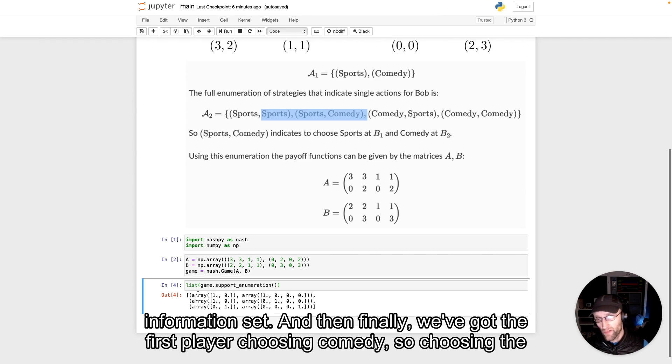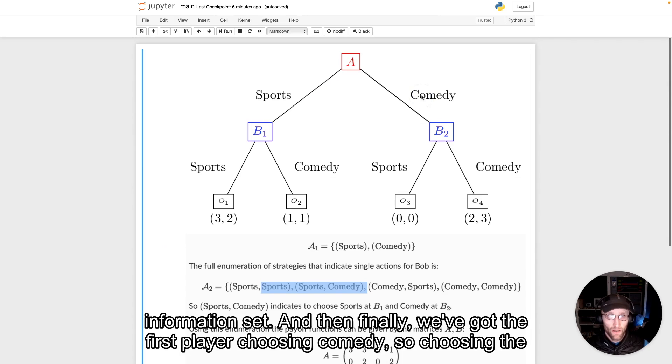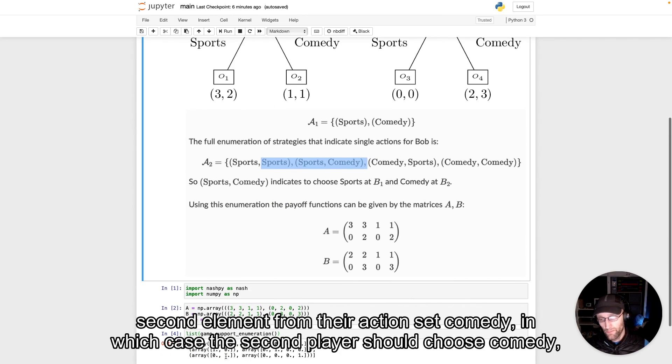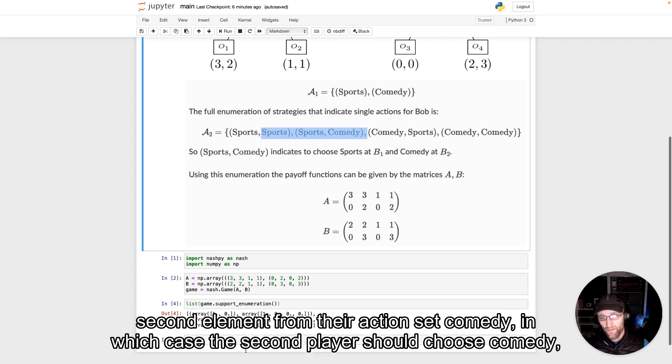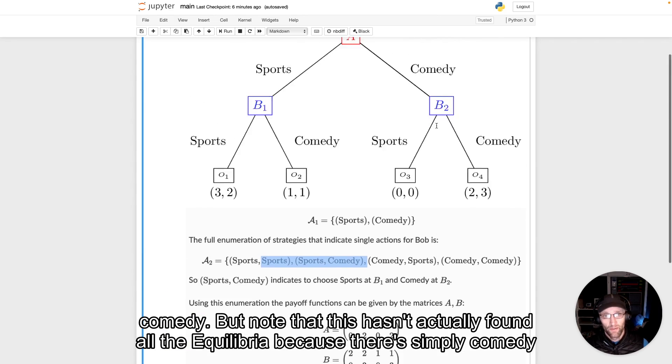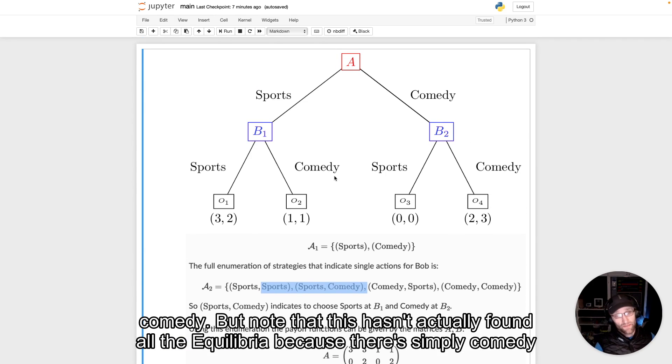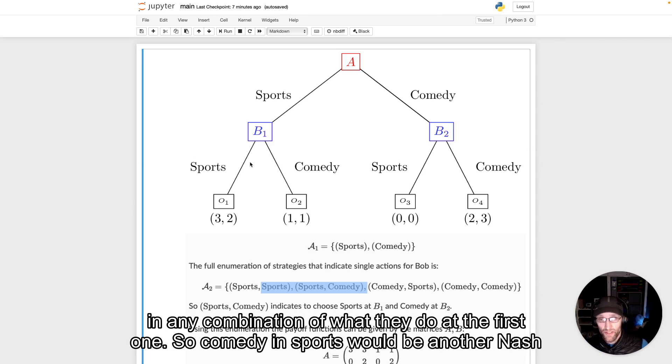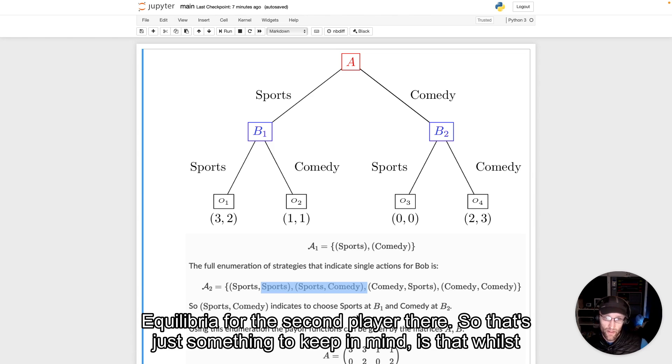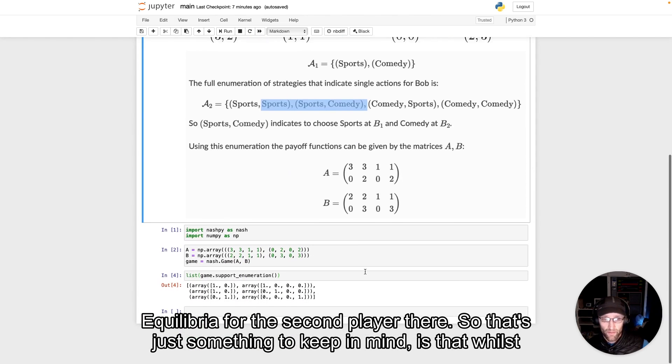And then finally, we've got the first player choosing comedy, so choosing the second element from their action set, comedy, in which case the second player should choose comedy, comedy. But note that this hasn't actually found all the equilibria because there's simply comedy in any combination of what they do at the first one. So comedy in sports would be another Nash equilibria for the second player there.